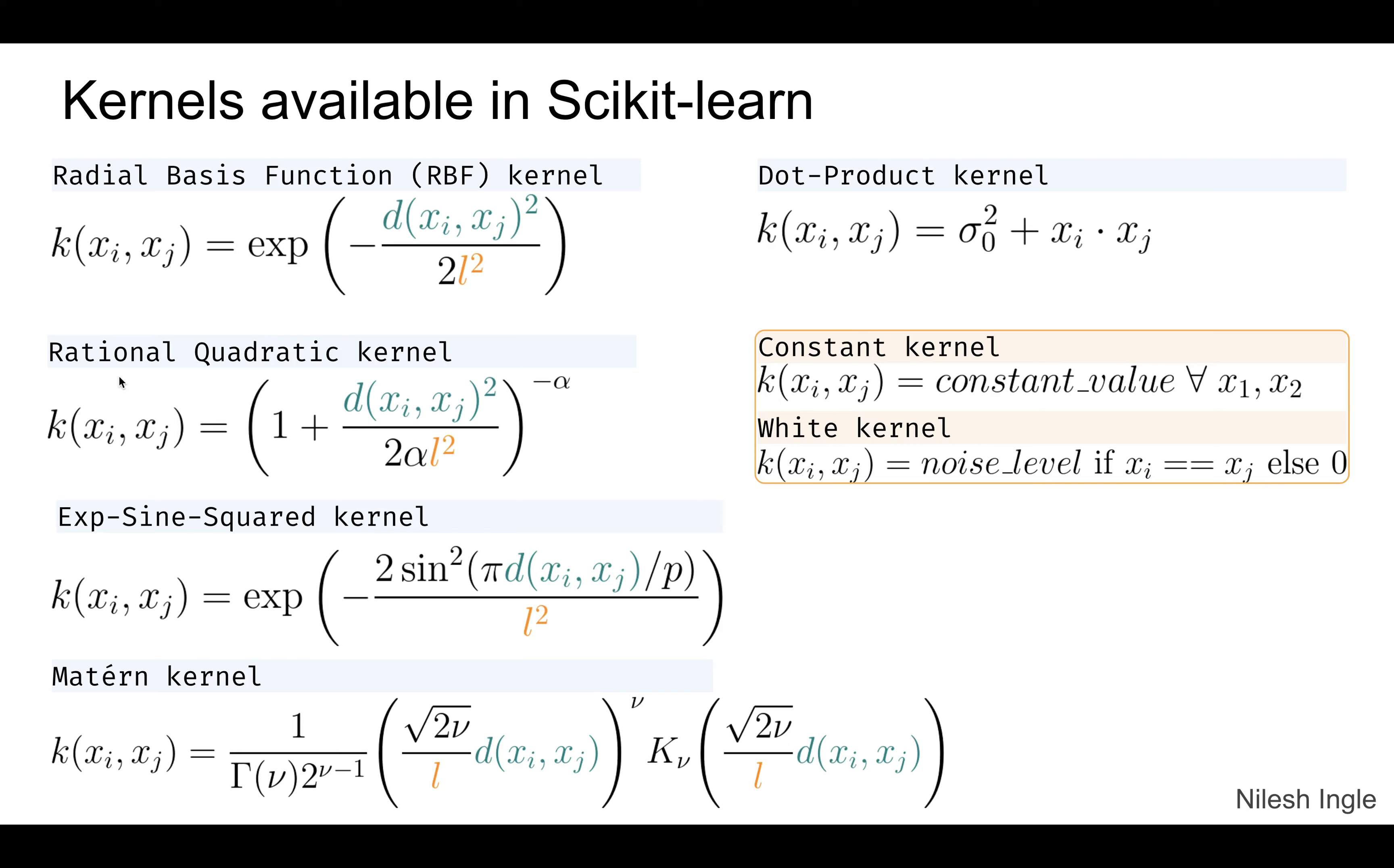Radial basis function (RBF) kernel, rational quadratic, exponential sine squared, Matern, and dot-product kernel. These kernels can be used to find the similarity between data points. In addition we have this constant kernel which can add a constant value to the kernel and a noise kernel that is shown here.